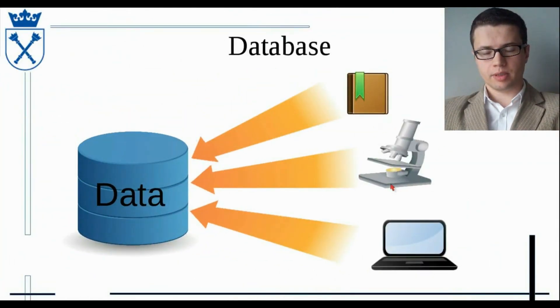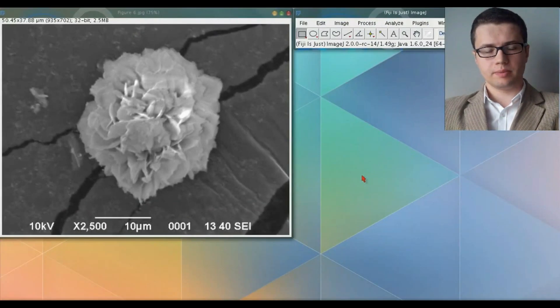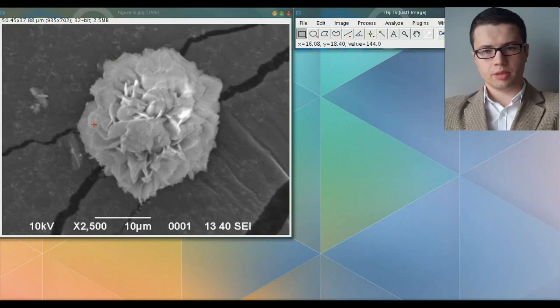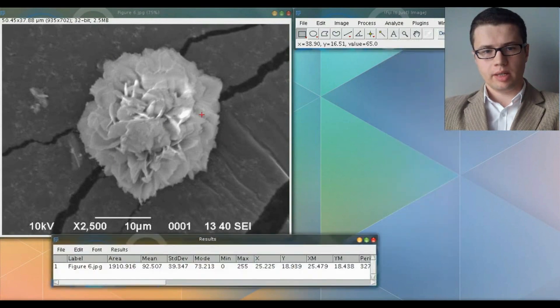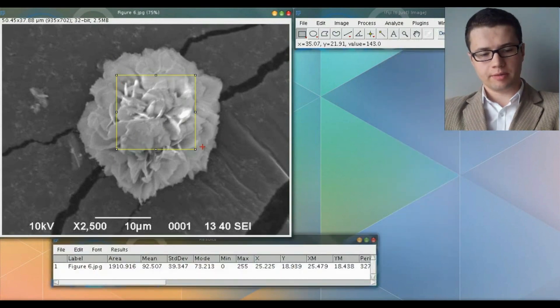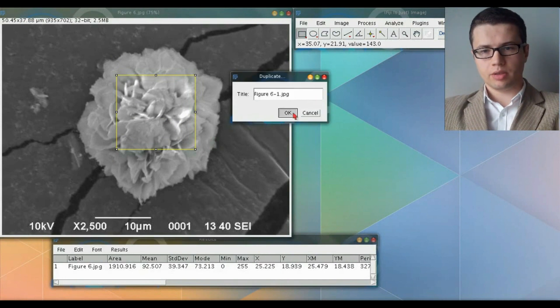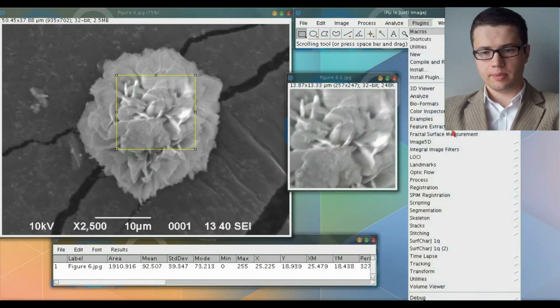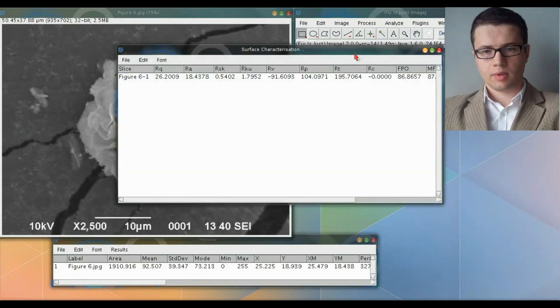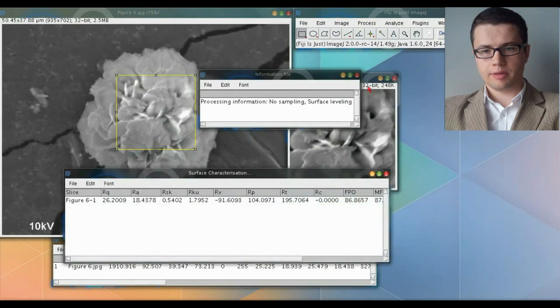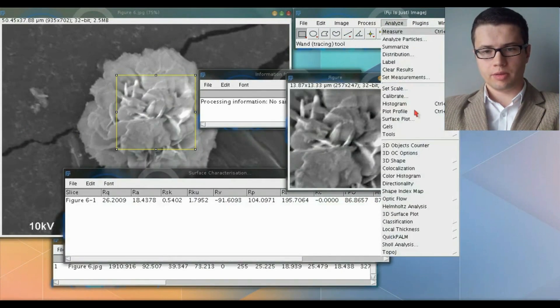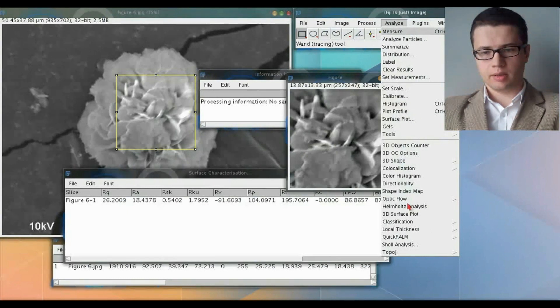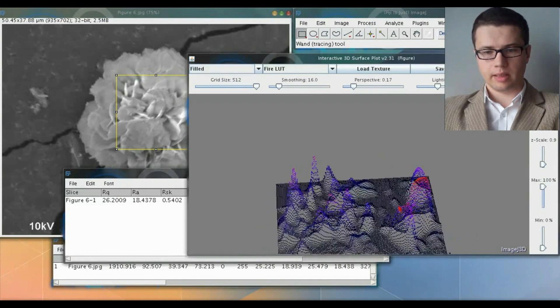Particle properties were calculated based on scanning electron microscope pictures. For that, we used ImageJ software. ImageJ allows us to calculate shape descriptors with standard measure tools, and we can also calculate roughness properties with an additional plugin, SurfCharJ. In ImageJ we can also compare the surface of various particles in 3D view, for example like that.